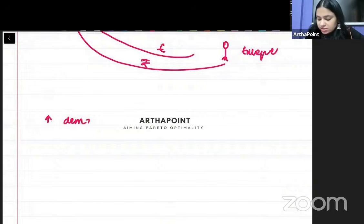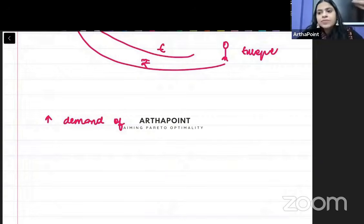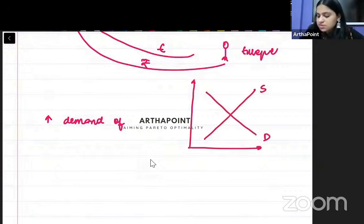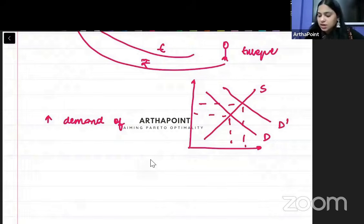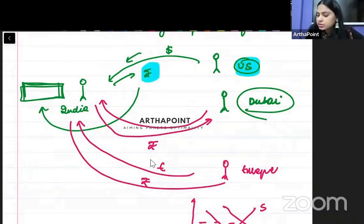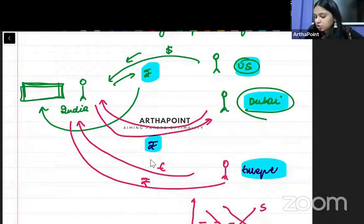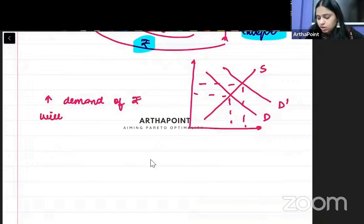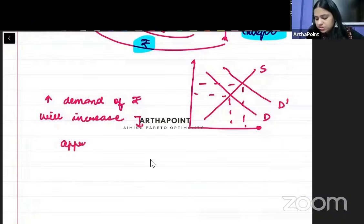Whenever there is an increase in the demand of anything — imagine when everyone starts demanding tomatoes or potatoes, their price goes up. We know that whenever the demand of a product increases, its price will increase. If the demand curve shifts upward, the price of the commodity will increase. So in currency terms, if the person in the US, the person in Dubai, and the person in Europe all want rupees, the demand for rupees will shoot up, and it will cause appreciation of the currency.